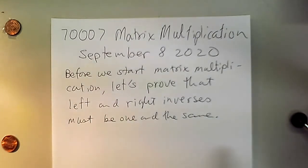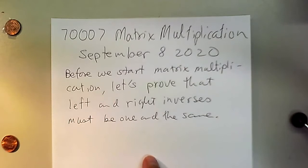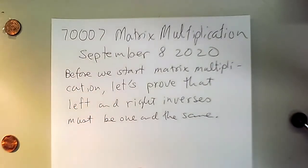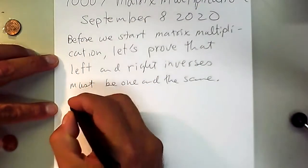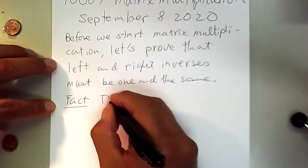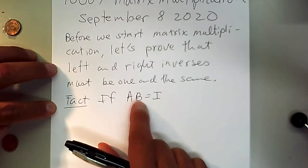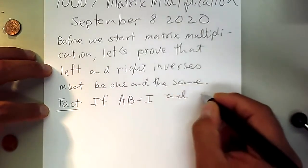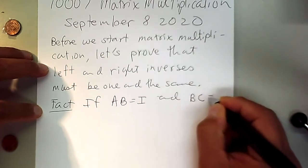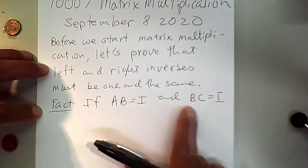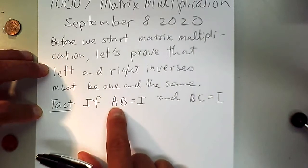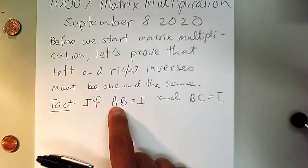Matrix multiplication is not commutative, which raises the question of whether there are left inverses and right inverses that may not be the same. But in fact they are the same — if there is a left inverse and a right inverse, they have to be equal. That's what we're going to prove. We'll assume all matrices involved are square matrices.